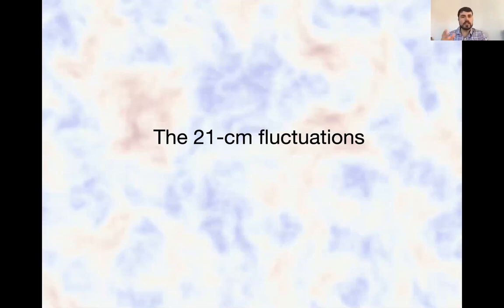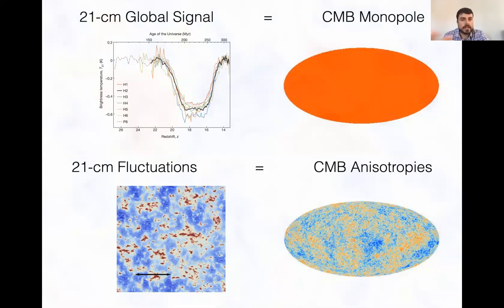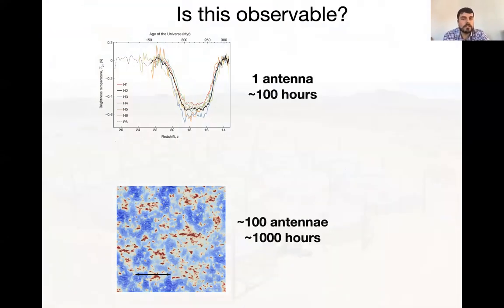Now let me tell you about the 21-centimeter fluctuations. The global signal is the average across the sky — it's like the CMB monopole, just a number as a function of redshift. For the CMB, the information is in the tiny hot and cold spots — the CMB anisotropies that Planck, WMAP, and so on have been observing. The same is true for 21-centimeter fluctuations, which vary around the global signal and carry most of the information. For the global signal, things like EDGES just need one antenna and about 100 hours of integration — about a couple of weeks. For fluctuations, you need hundreds of antennas and thousands of hours, so it's experimentally much more costly. The collaborations going after this signal typically have around 100 people instead of 5.